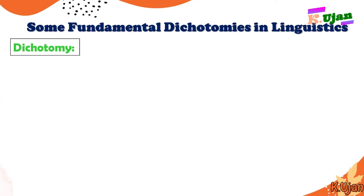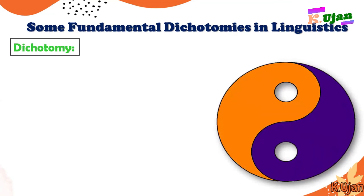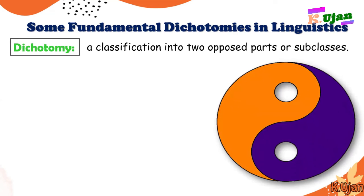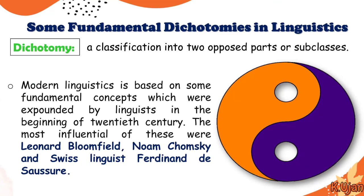We must understand that when learning from the syllabus — whether M.A. English or BS English — there is a topic called 'some fundamental dichotomies in linguistics.' A dichotomy is a classification into two opposed parts or subclasses. Modern linguistics is based on some fundamental concepts expounded by linguists at the beginning of the 20th century. The most influential of these were Bloomfield, Noam Chomsky, and the Swiss linguist Ferdinand de Saussure. From now onwards, we are going to learn about these distinctions and different terms in linguistics.